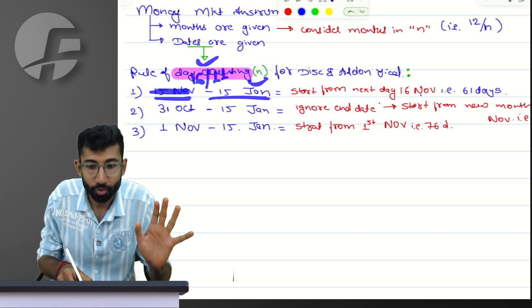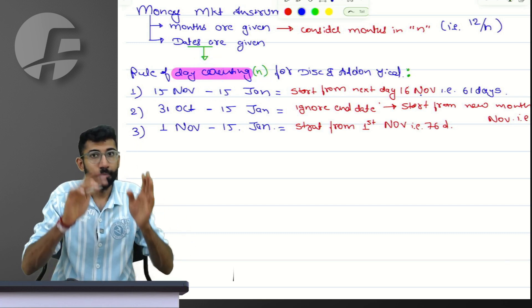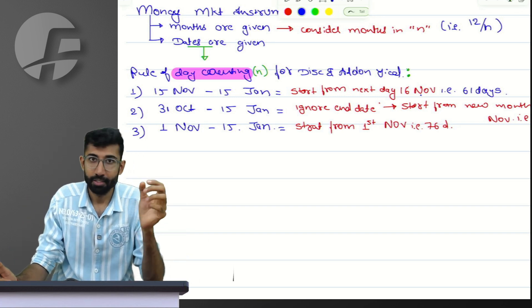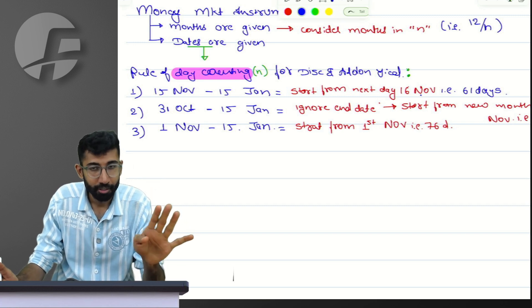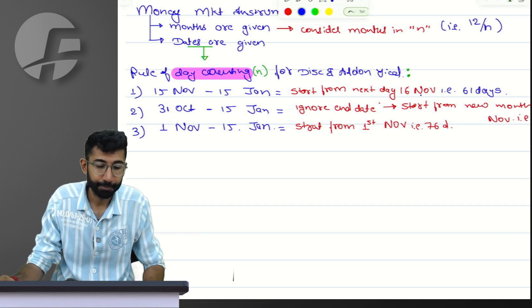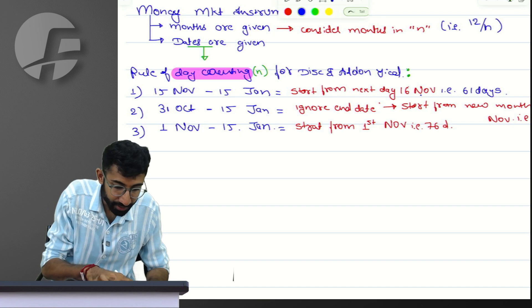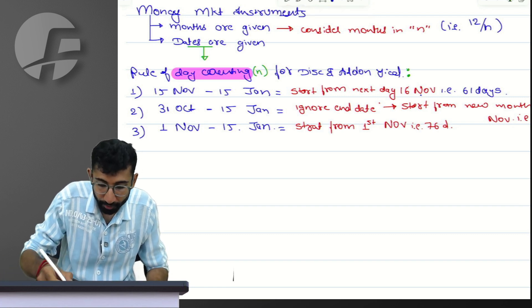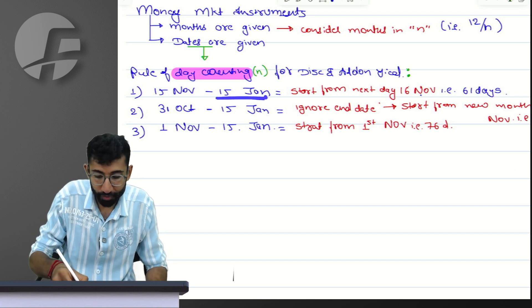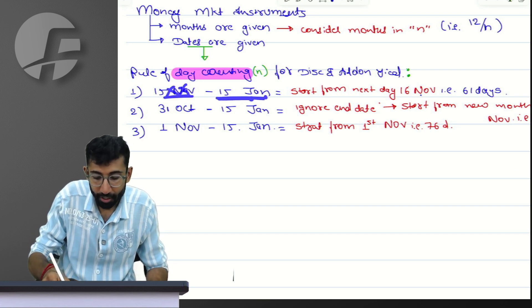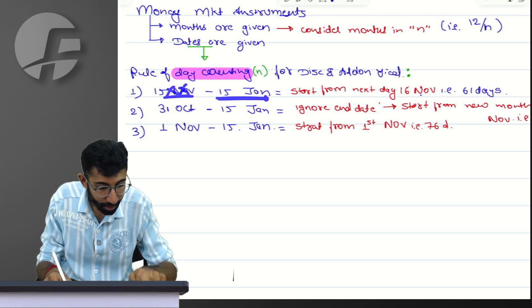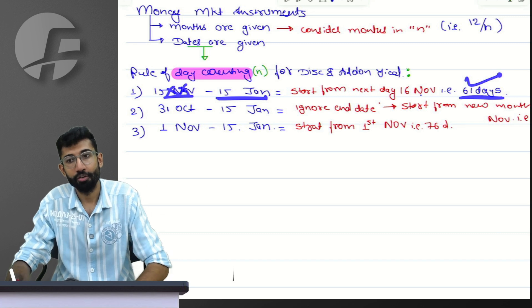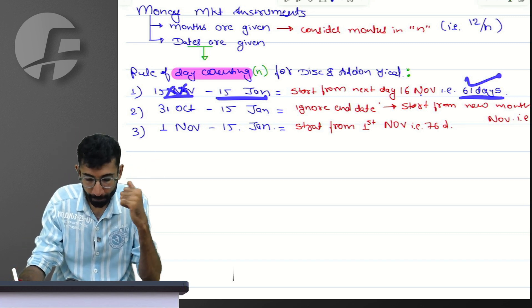Please have your calculators in hand. From 16th November to 30th November it is 15 days — 16, 17, 18, 19, 20 plus 10 more days equals 15 days — plus 31 days of December, and 15th January will obviously be counted because we ignored 15th November. 15th January till the end of the day is 15 more days. Are you getting a calculation of 61 days?